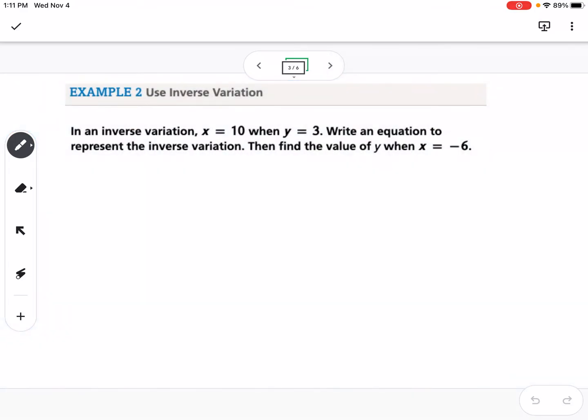Our second example says in an inverse variation x equals 10 when y equals 3. Write an equation to represent the inverse variation, and then find the value of y when x equals negative 6. Our equation is y equals k over x, where k is our constant of variation.